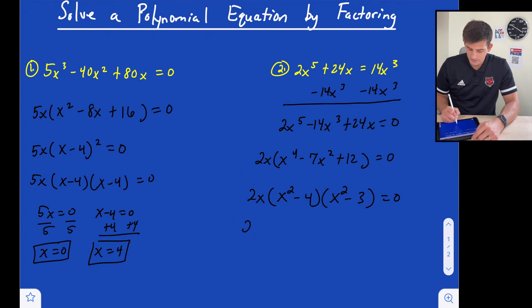So now it's not factored completely because we see we have the difference of two squares right there. So now we can factor it down even more. So this would become x minus 2 and x plus 2, and then this would still be x squared minus 3. Okay, so now we have four terms here we can set equal to zero and get our zeros or our roots of the function.